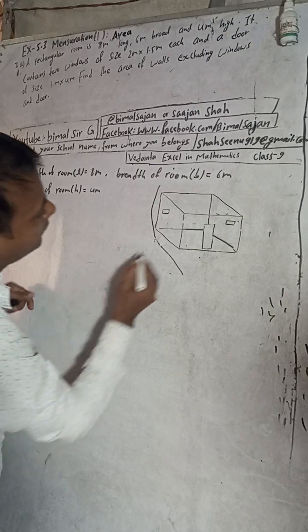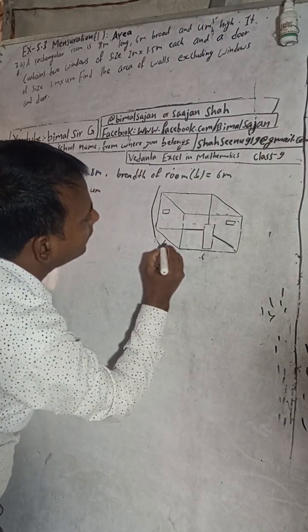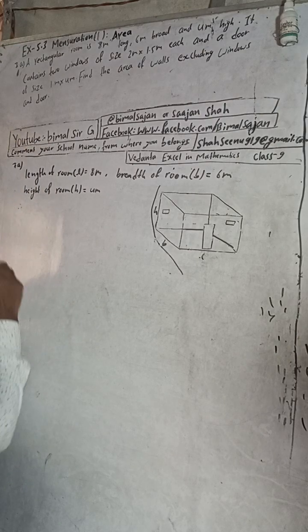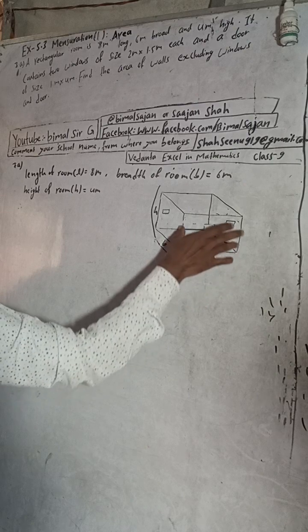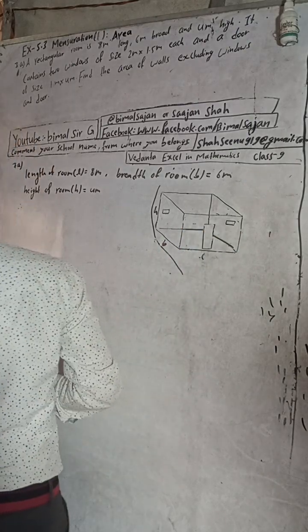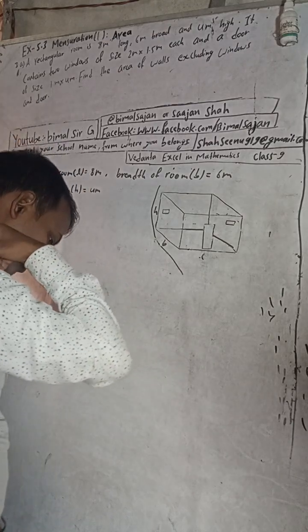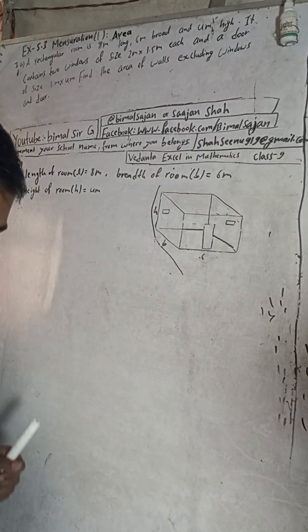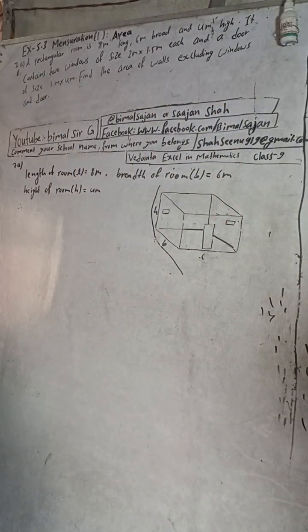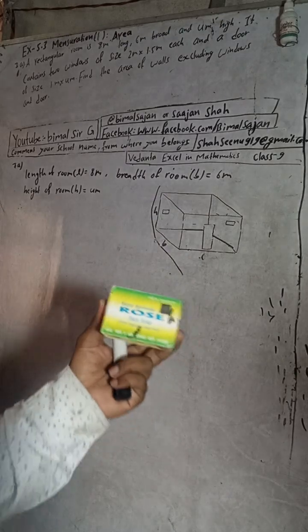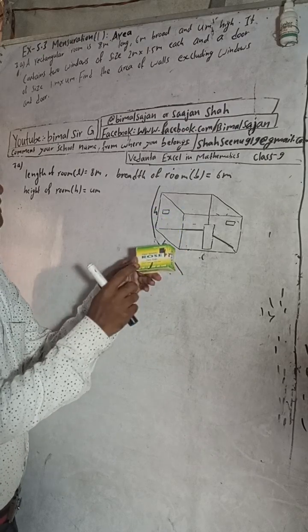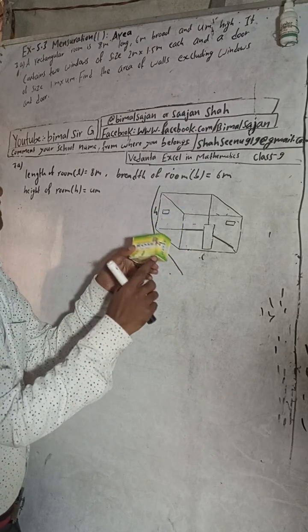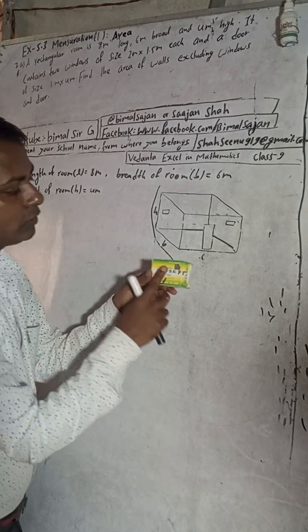Area of four walls. Let me show you a demonstration. Suppose this is our room shape. This is the room, then this is the length, this is breadth, and this is our height. So this wall and this wall, this front wall means what? The area is length into height.